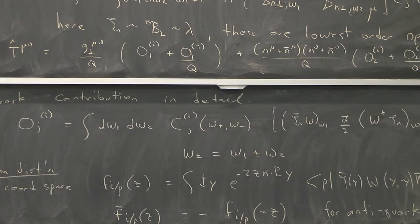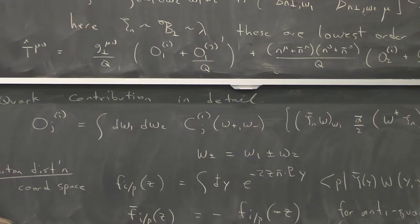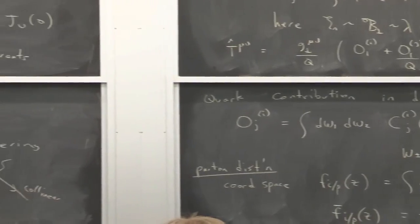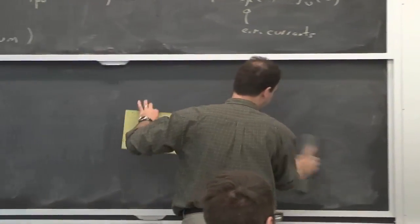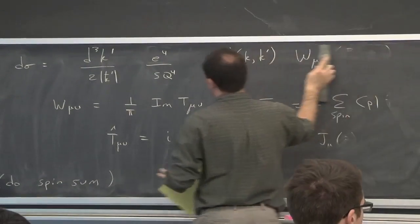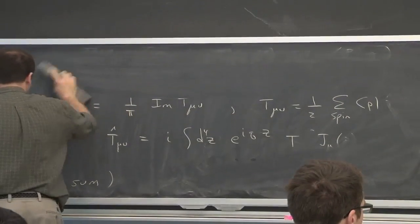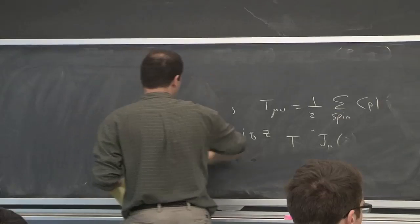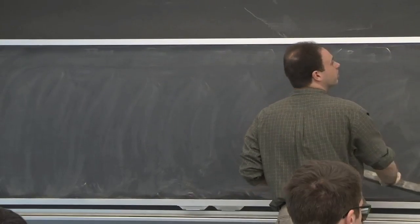So that's an operator definition of the parton distribution function. You can also define it by moments of the operator. That's the way that, for example, Peskin does it. But if you sort of put all the information in those moments back into a single operator, then it becomes this thing. And if we Fourier transform this, then it becomes the operator that we have up there.